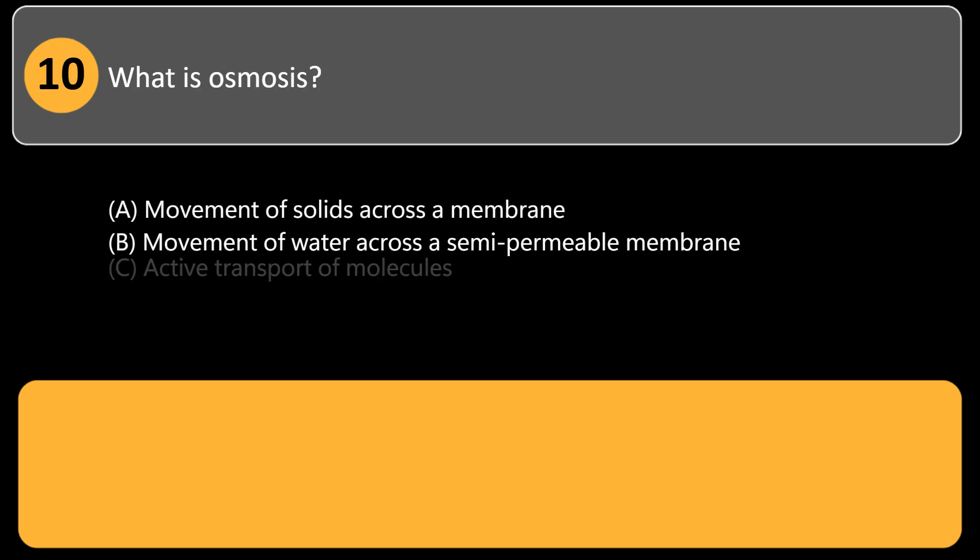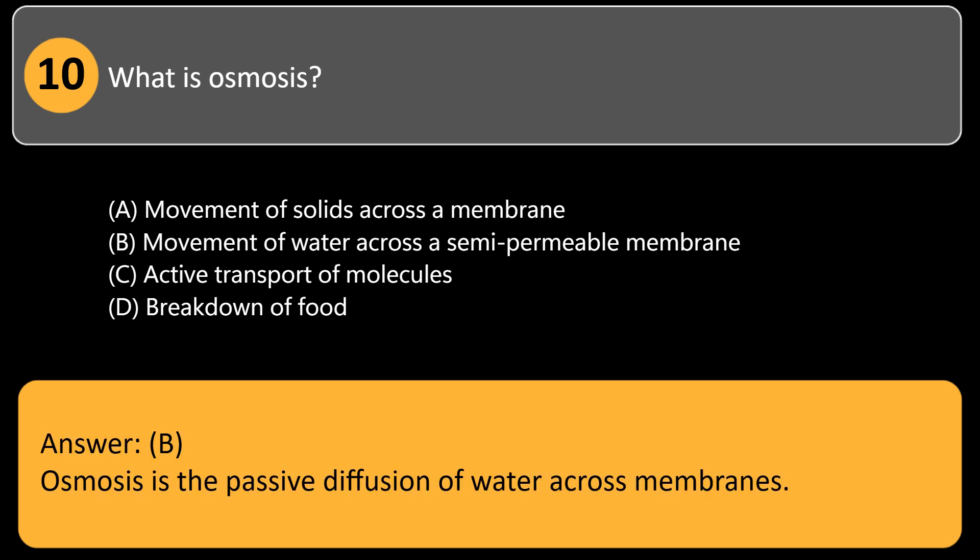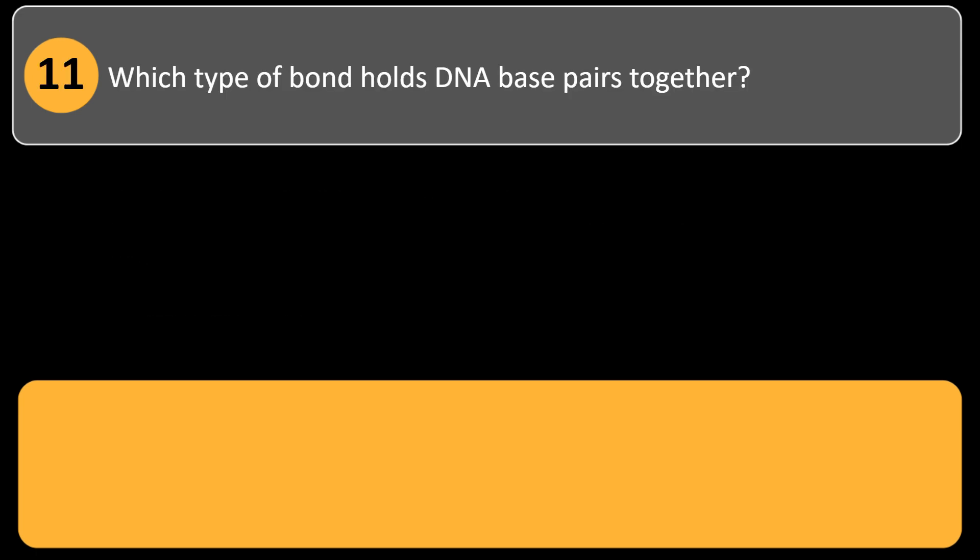What is osmosis? A. Movement of solids across a membrane, B. Movement of water across a semi-permeable membrane, C. Active transport of molecules, D. Breakdown of food. Answer: B. Osmosis is the passive diffusion of water across membranes.